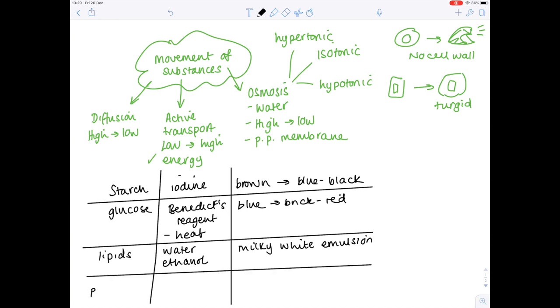And then lastly, the test for protein. You want to use biuret reagent. I'm not sure if I'm pronouncing that right. I always struggle. And you'll see a purple color form if you have a positive result.